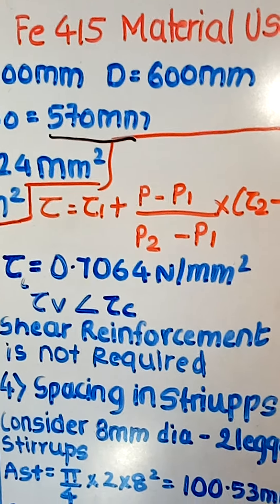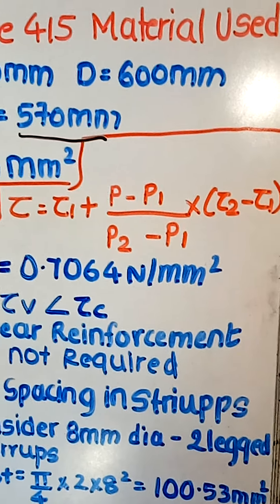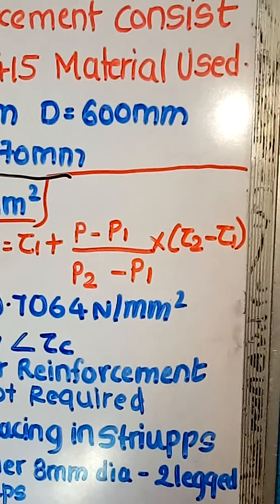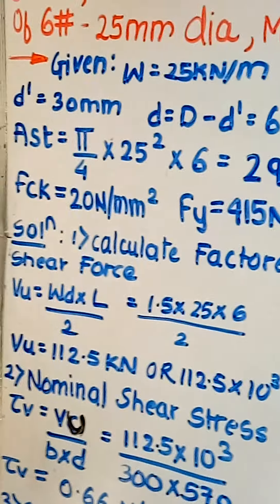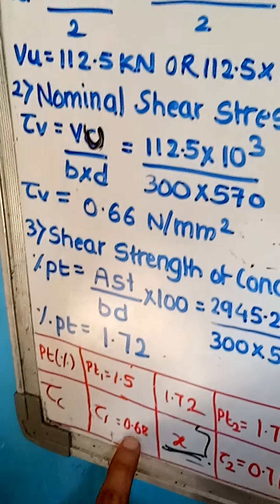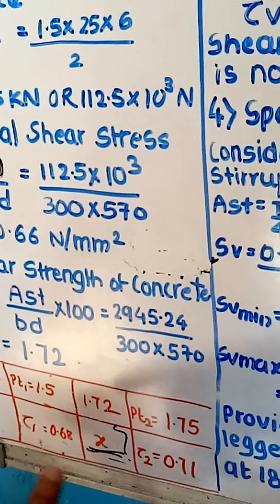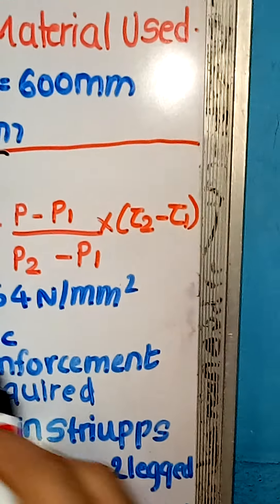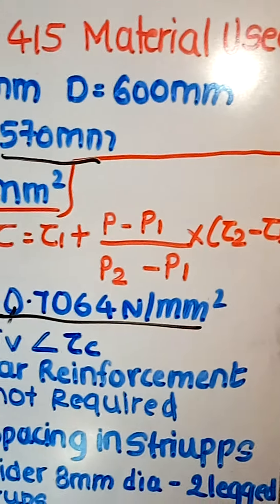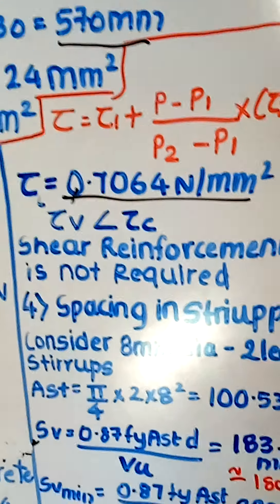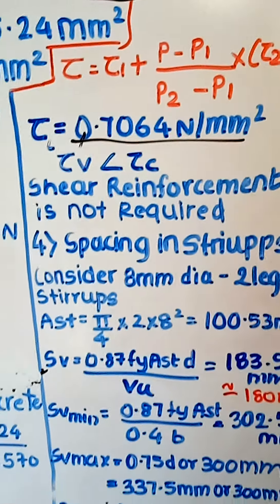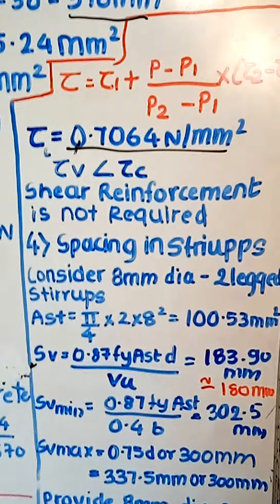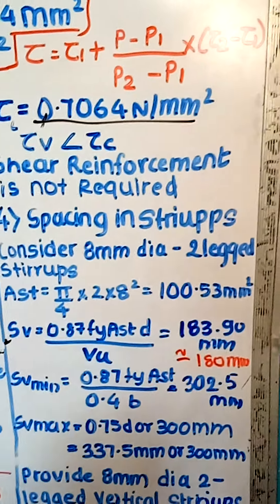Using this formula, tau C comes out to be 0.7064 N/mm². Now tau V is less than tau C. If our tau V is less than tau C, then shear reinforcement is not required. If tau C is less than tau V, then shear reinforcement is required.